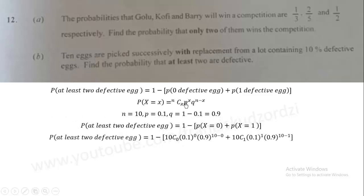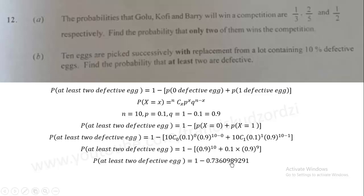Then we evaluate. When x equals 0, we plug it into this formula. When x equals 1, we plug it into this formula to get this. What do we do next? We just have to evaluate with our calculators. When we simplify and evaluate, we get 0.736098929, this expression. When we subtract, we obtain 26% as the answer. So 26% of the time, you get at least 2 of the eggs that are defective.